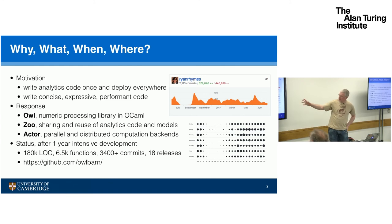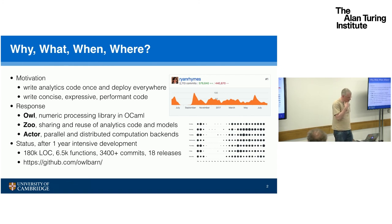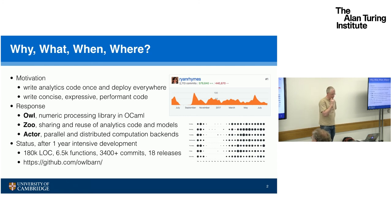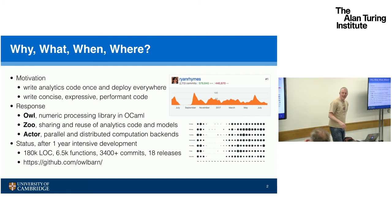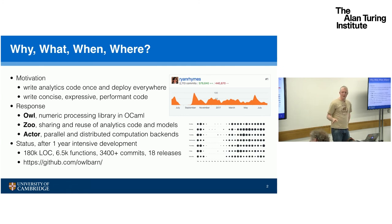The state is — this is after just over a year of fairly intensive development — it's about 180,000 lines of code, 6,500 functions, just under 3,500 commits, and there have been 18 releases so far. We've just moved all of the relevant repositories into the Albarn organization. If you want to stop me to ask questions at any point, please do. I have a terrible habit of just talking faster and faster unless people interrupt.